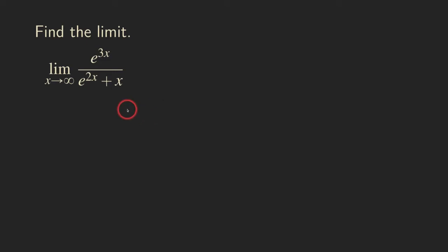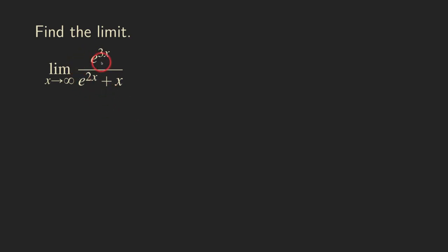Hello everyone. Let's look at this limit problem here. We are not just looking at one limit problem — we are looking at two. This is one of them. We have e to the 3x at the top, and then e to the 2x at the bottom, and there is also an x at the bottom added to the e to the 2x.